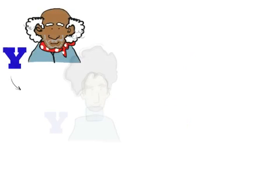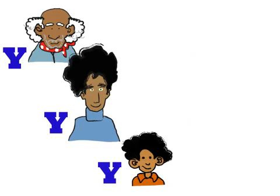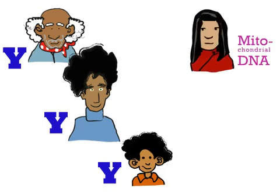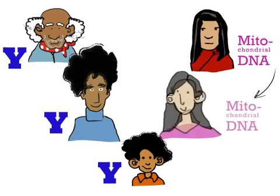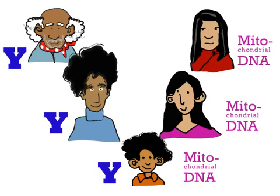However, most of the Y chromosome is handed down from father to son entirely intact. Likewise, in humans, DNA in the mitochondria is passed on only from mother to child.